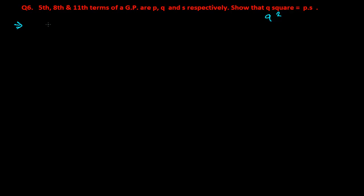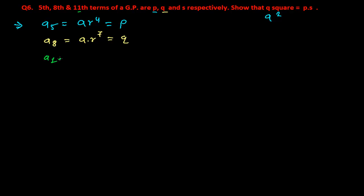As usual, let's write out the terms. The 5th term is a·r to the power 4, which equals P. The 8th term is a·r to the power 7, which equals Q. And the 11th term is a·r to the power 10, which equals S.